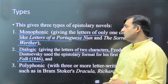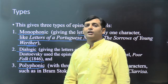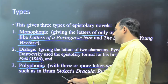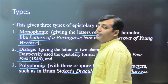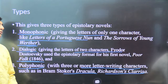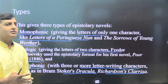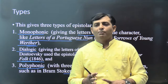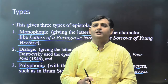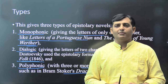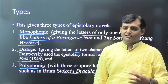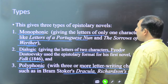If there are more than two letter-writing characters, the novel is called polyphonic — 'poly' meaning multiple, 'phonic' meaning sound. Examples include Bram Stoker's 'Dracula' and Richardson's 'Clarissa,' which has four characters who write letters. So the three types of epistolary novels are: monophonic (single character), dialogic (two characters), and polyphonic (three or more characters). After epistolary, we now come to the second type: the picaresque novel.